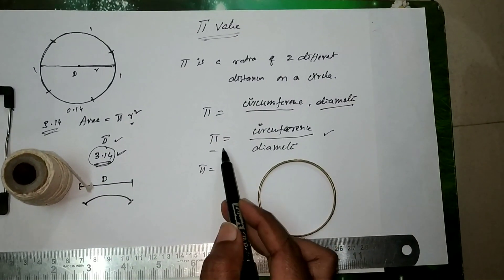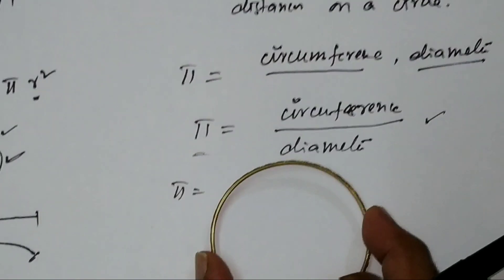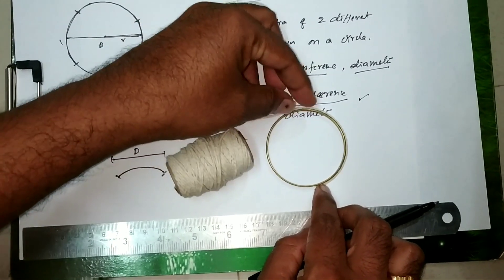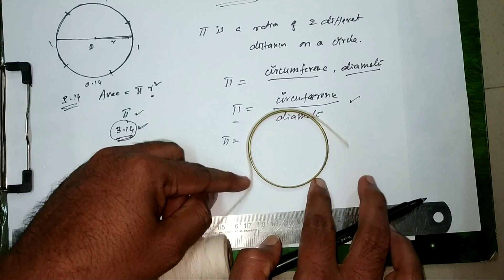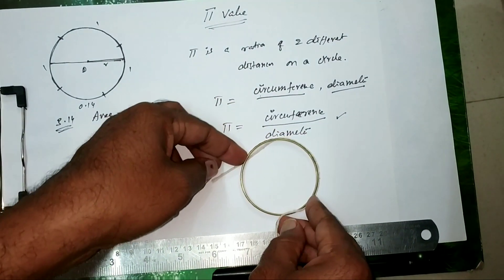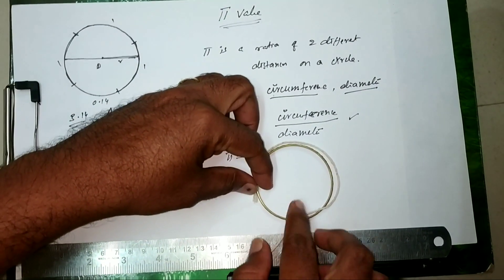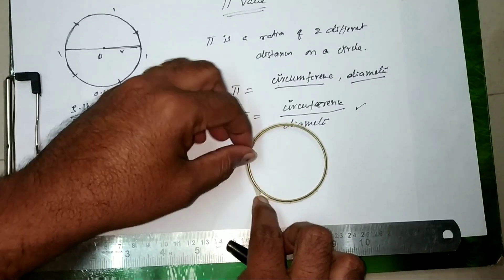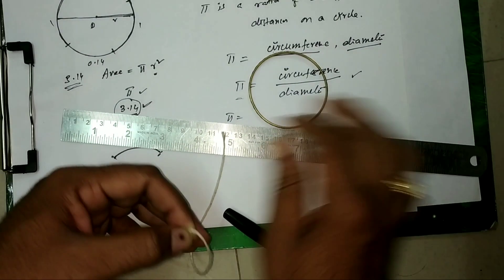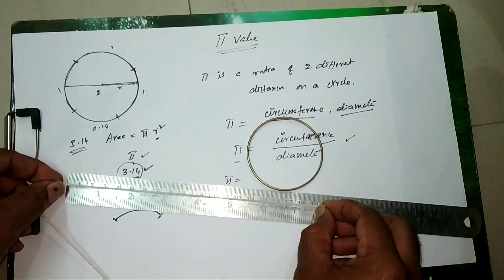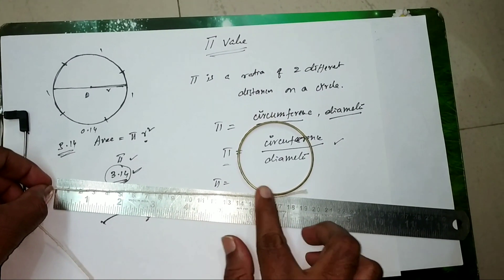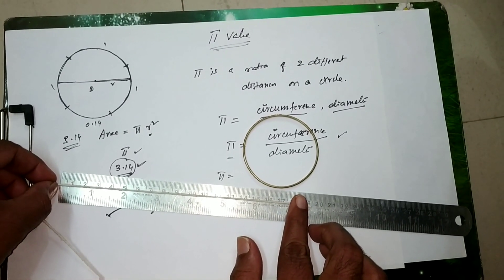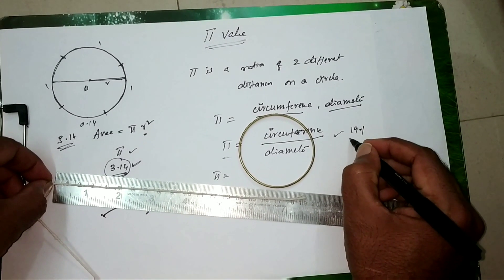According to the formula, circumference divided by diameter equals pi. So for this bangle, we need to find the circumference. I'm using the thread to measure the circumference by wrapping it around the bangle. The measurement on the scale gives us approximately 19.1 cm. So the circumference is 19.1.